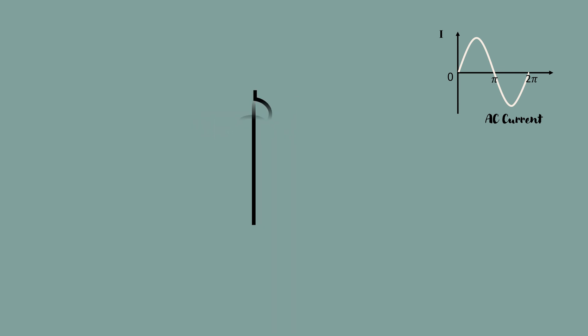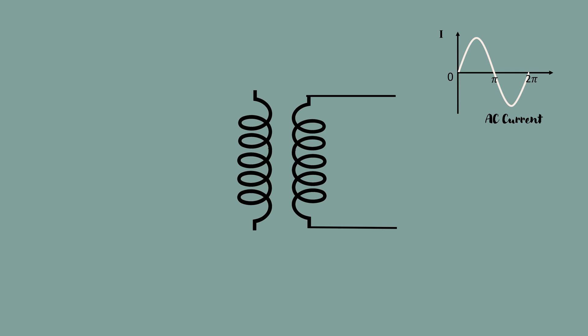Bending a conductor into multiple closely spaced loops to form a coil enhances this effect. If we place a second coil near the first coil and if we pass the AC current to flow through the first coil, the magnetic field in first coil induces an EMF or voltage in the second coil.